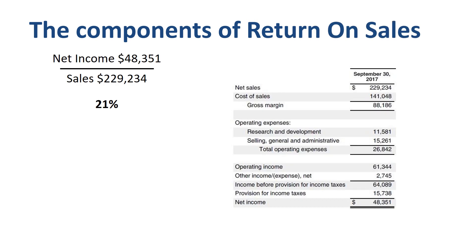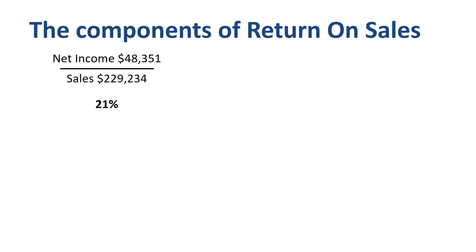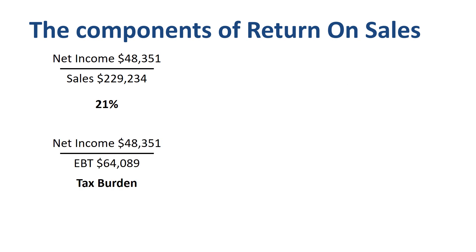For that we need a few more numbers from the income statement. We already looked up net income and sales; we will now also use operating income or EBIT, and income before provision for income taxes in our calculations. Net income over earnings before taxes, which is called tax burden, is 75%, which means that Apple's effective tax rate in 2017 is 25%.